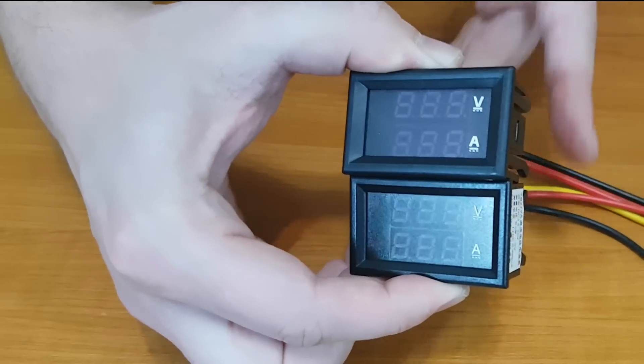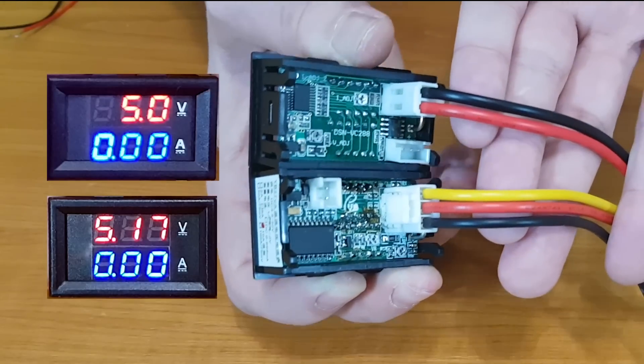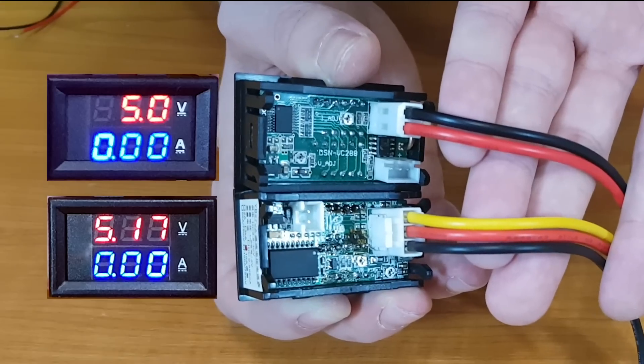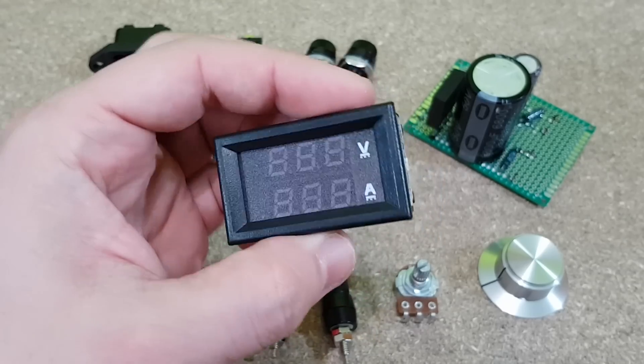Usually the voltmeters with two thick wires have one decimal place and the voltmeters with three thick wires have two decimal places. But you should always read the specification and reviews.